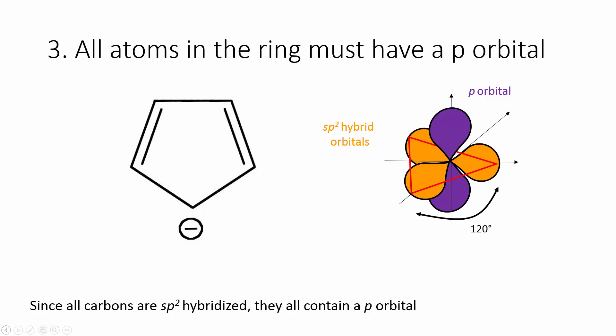Requirement number three: All atoms in the ring must have a p-orbital. In order to check this requirement, we need to check the hybridization of all of the carbons that form the ring. Oh wait, we've already done that. If all of our carbons in the ring are sp² hybridized, this means that they all contain a p-orbital. And thus, we meet our third requirement.